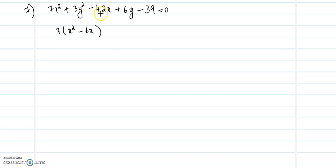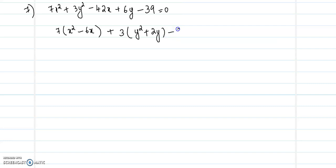That will become minus 42. Then taking 3 outside from the two terms containing y squared, we will get y squared plus 2y, then minus 39 equal to 0.